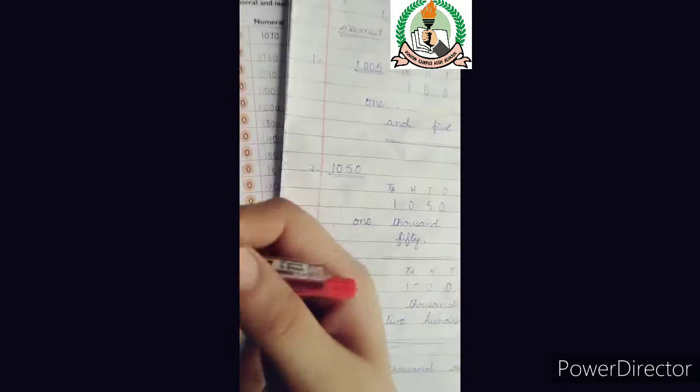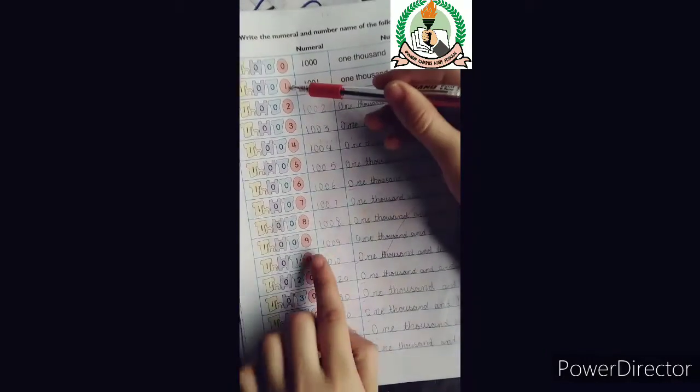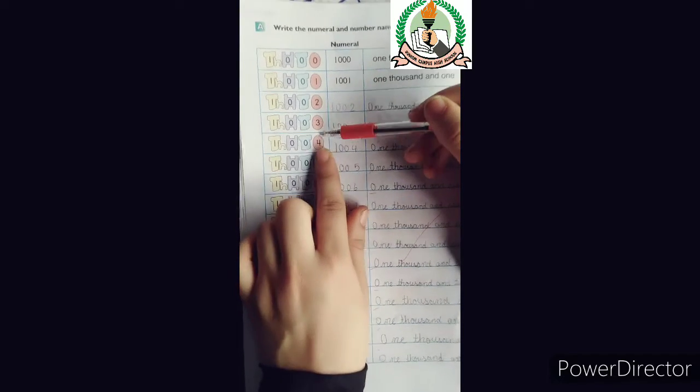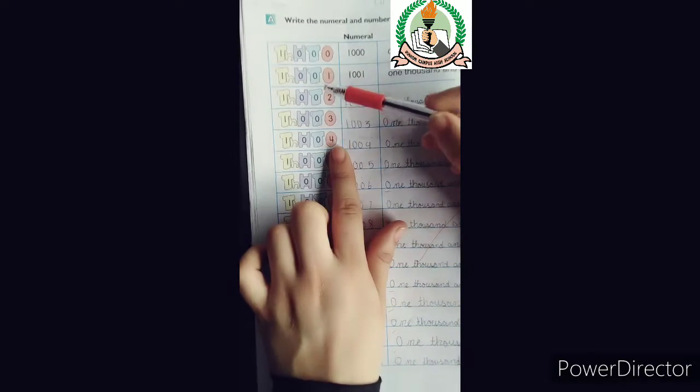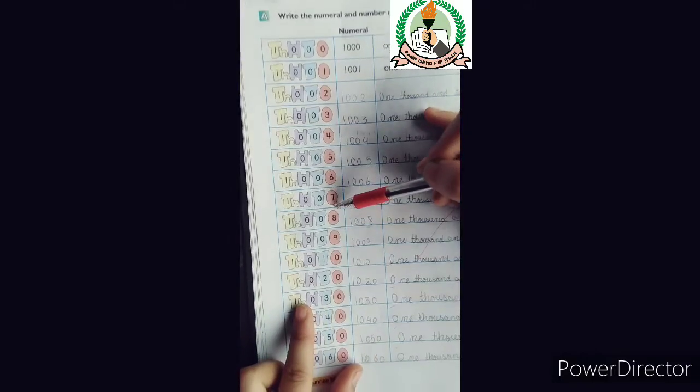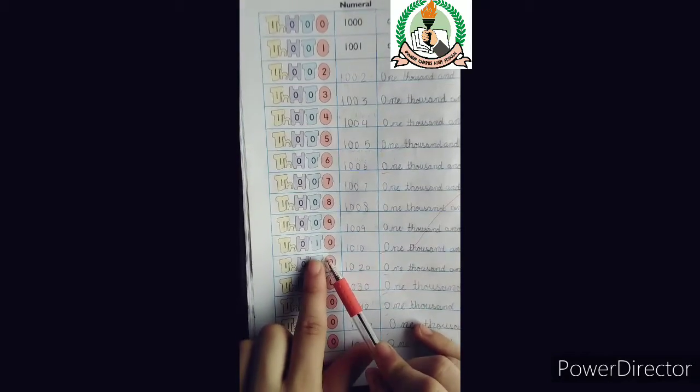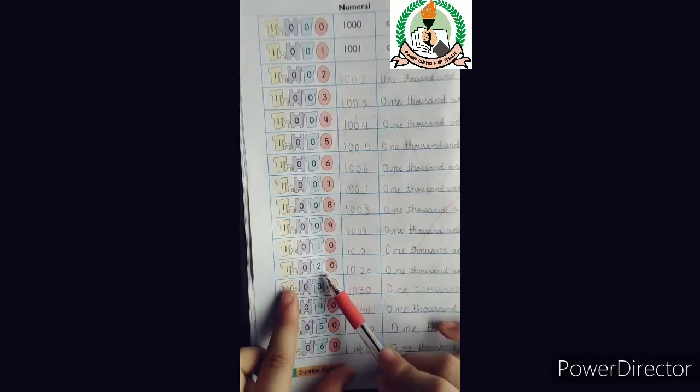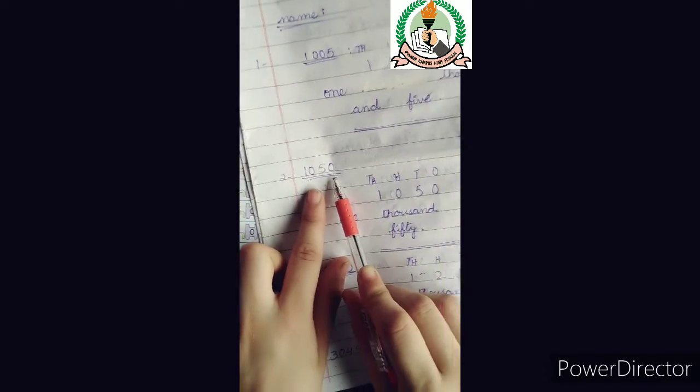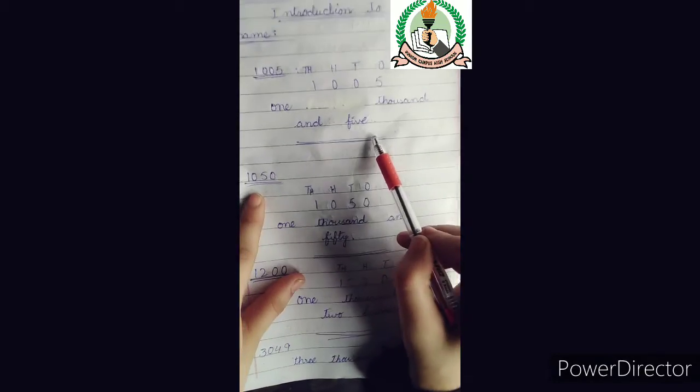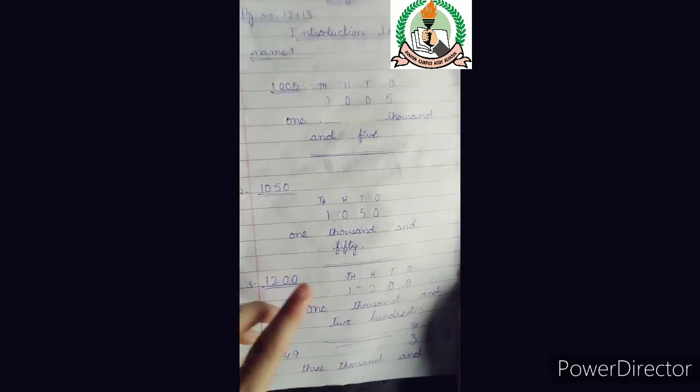Same method. All these questions will follow the same methods. One pattern is running through all of these. Here we have changes coming at the ones place. Here at the ones place, first there was zero. Then one, then two, three, four, five, six, seven, eight, nine. After nine, once the ones place is complete, it will change at the tens place. Now our tens place value is changing. First we had 1005, then 1050. The tens place value changed.